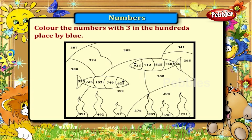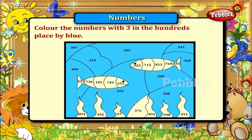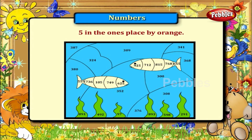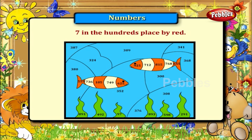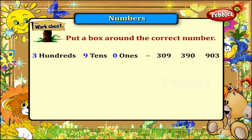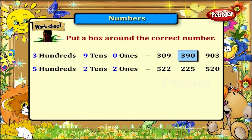Color the numbers with 3 in the hundreds place by blue. Nine in the tens place by green. Five in the ones place by orange. Seven in the hundreds place by orange. Seven in the hundreds place by red. Five hundreds, two tens, two ones.